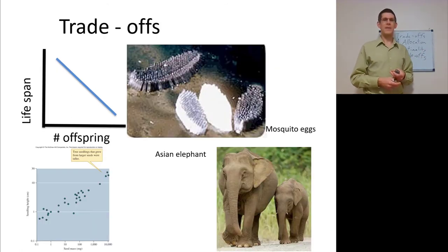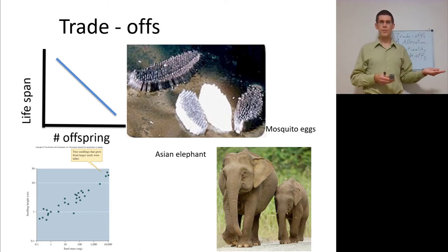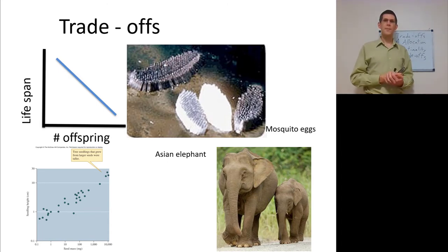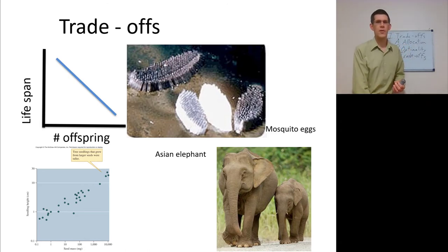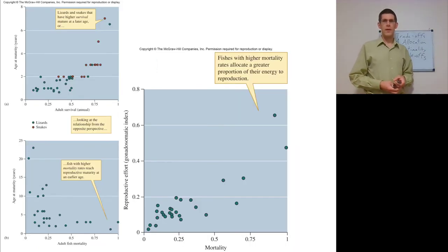Looking at lifespan versus number of offspring: generally, the more offspring produced, the shorter the lifespan, with parental care implications as well. Mosquitoes are there for a season and then gone, whereas elephants live much longer but produce fewer offspring. This is also related to how long offspring take to reach sexual maturity — very fast for mosquitoes, much longer for elephants.